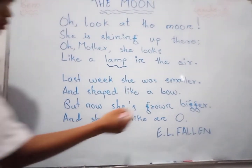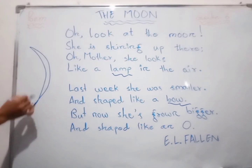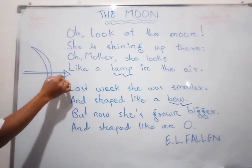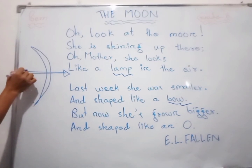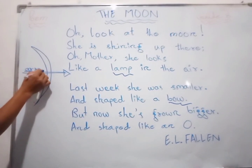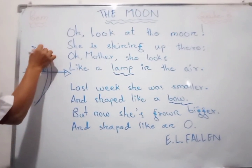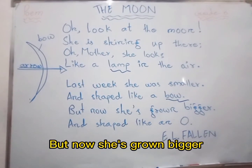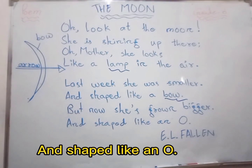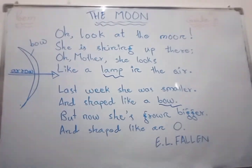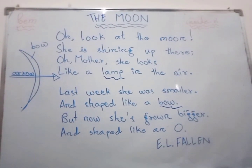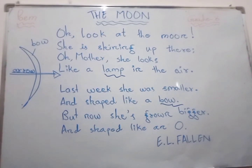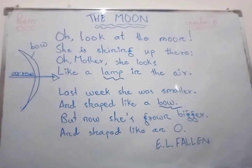A bow — that is like an arrow bow. But now see it grow bigger. You will read again from the title to the end. The Moon: Oh, look at the moon.